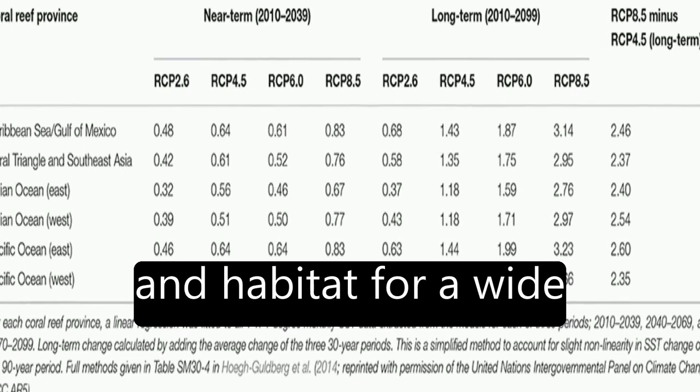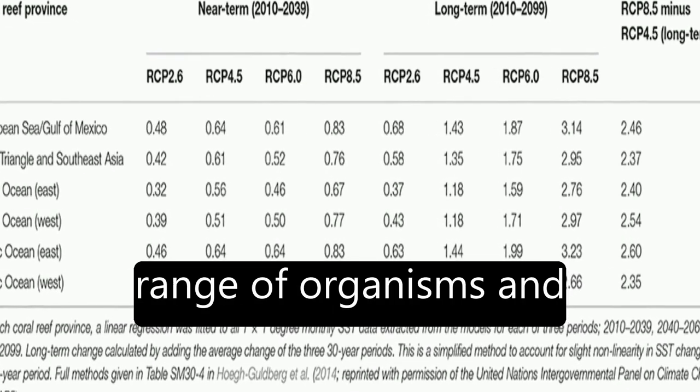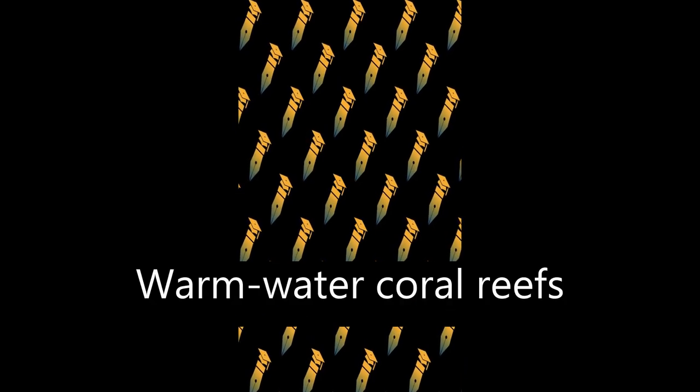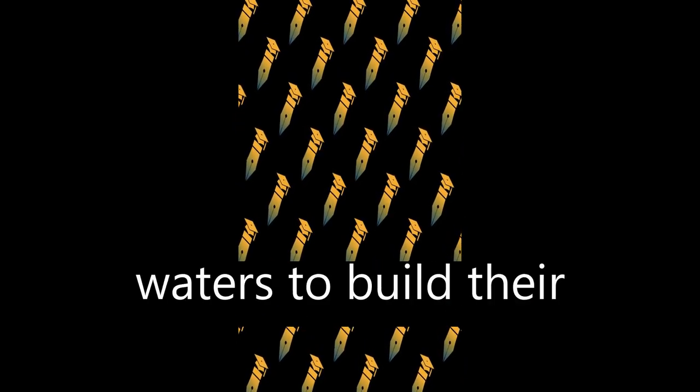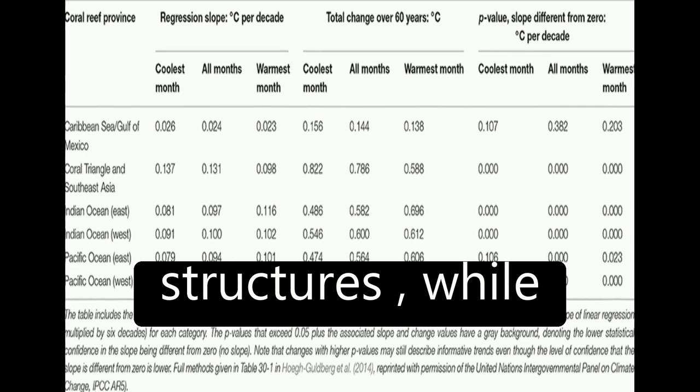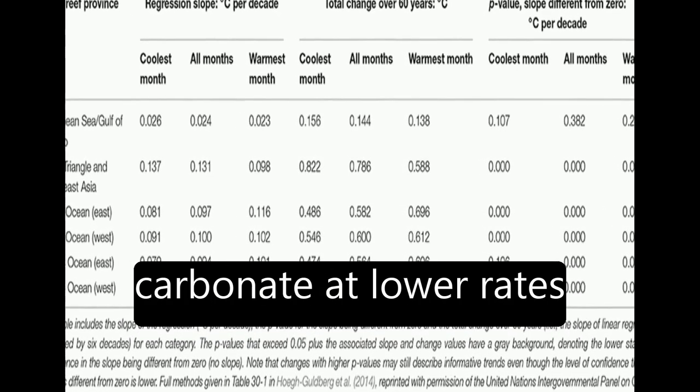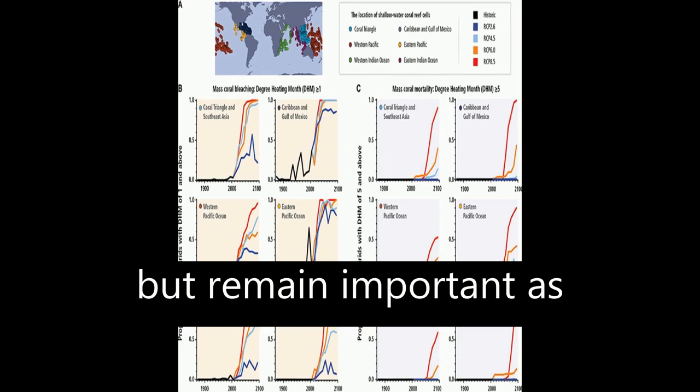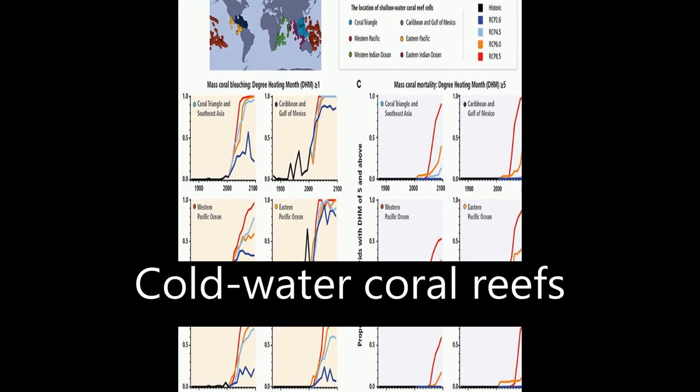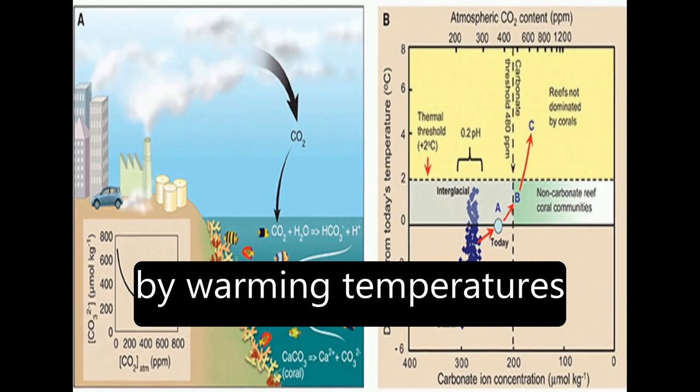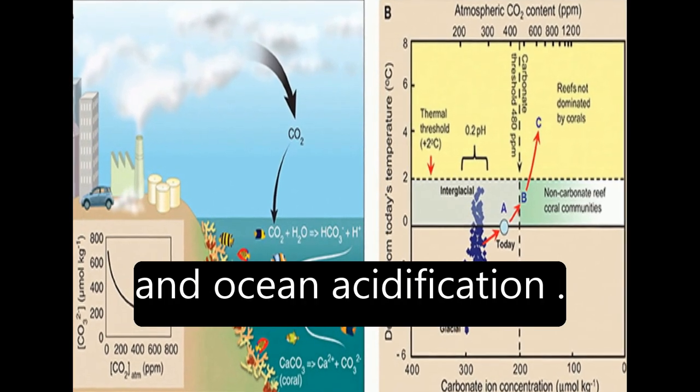Coral reefs provide food and habitat for a wide range of organisms and ecological goods and services. Warm-water coral reefs grow in shallow sunlit waters to build their calcium carbonate structures, while mesophotic coral reefs accumulate calcium carbonate at lower rates but remain important as habitat. Cold-water coral reefs are found in the dark depths and are threatened by warming temperatures and ocean acidification.